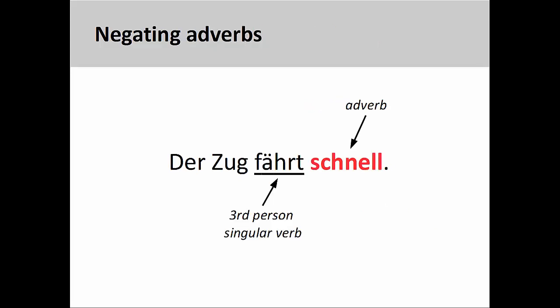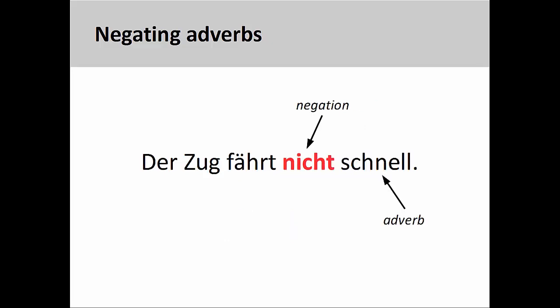We can do the same with adverbs. In this sentence, der Zug fährt schnell — the train runs fast — the adverb schnell describes the manner in which the train is running. To negate this adverb, we also insert nicht before it: der Zug fährt nicht schnell — the train doesn't run fast.